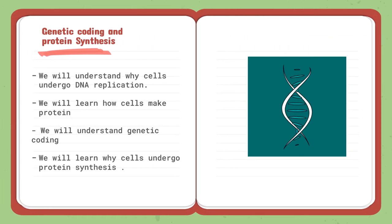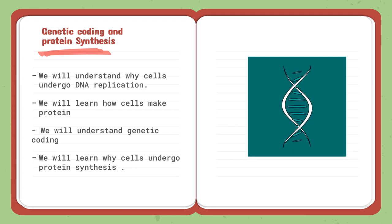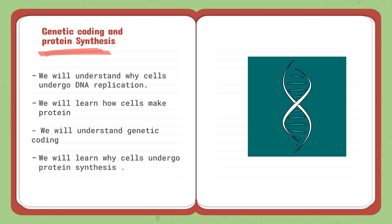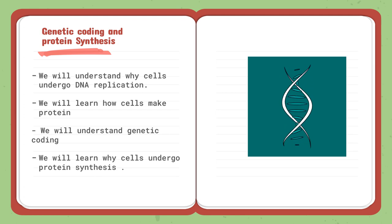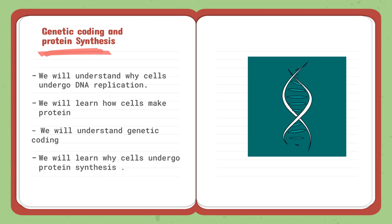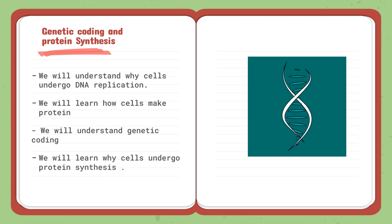Moving on to the last lesson: genetic coding and protein synthesis. We will understand why cells undergo DNA replication — what DNA means, how we replicate it, and why it is replicated. We will learn how cells make protein, understand genetic coding and how it helps in DNA replication, and learn how cells undergo protein synthesis. We will understand how the genetics in our body support these two processes.